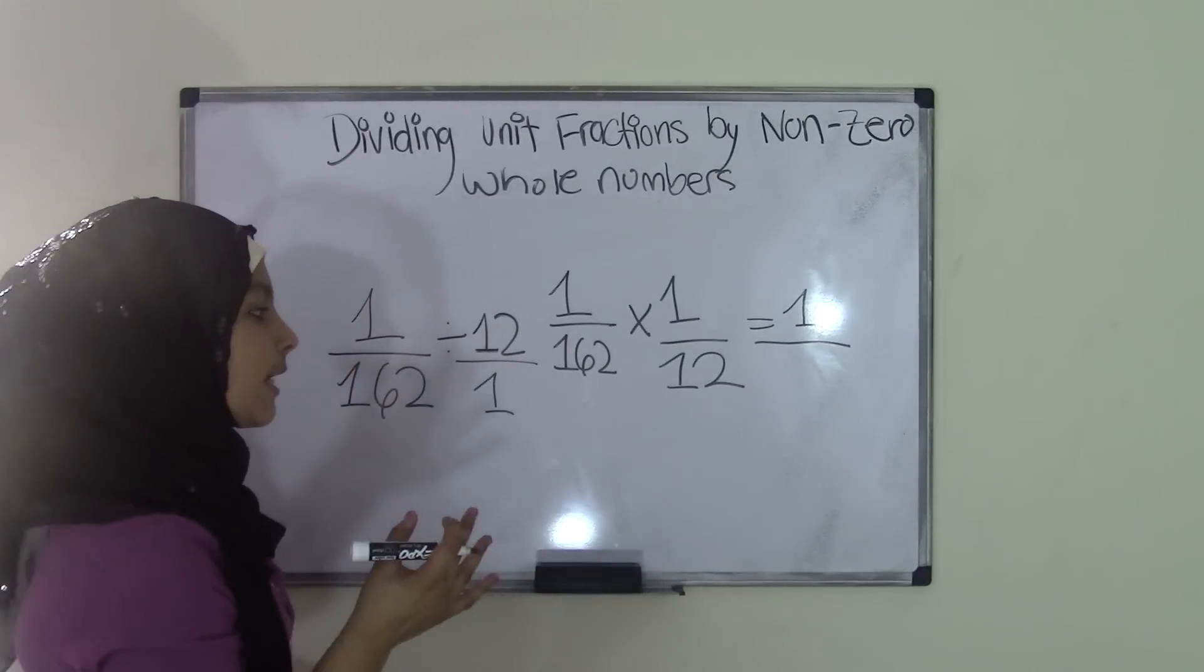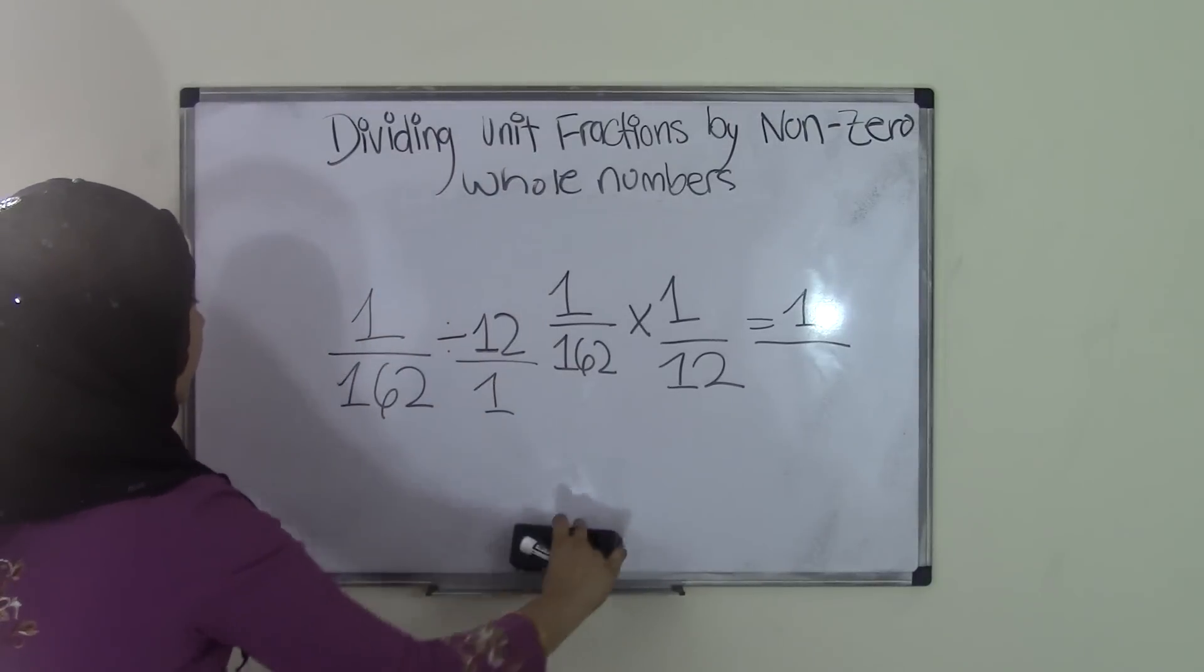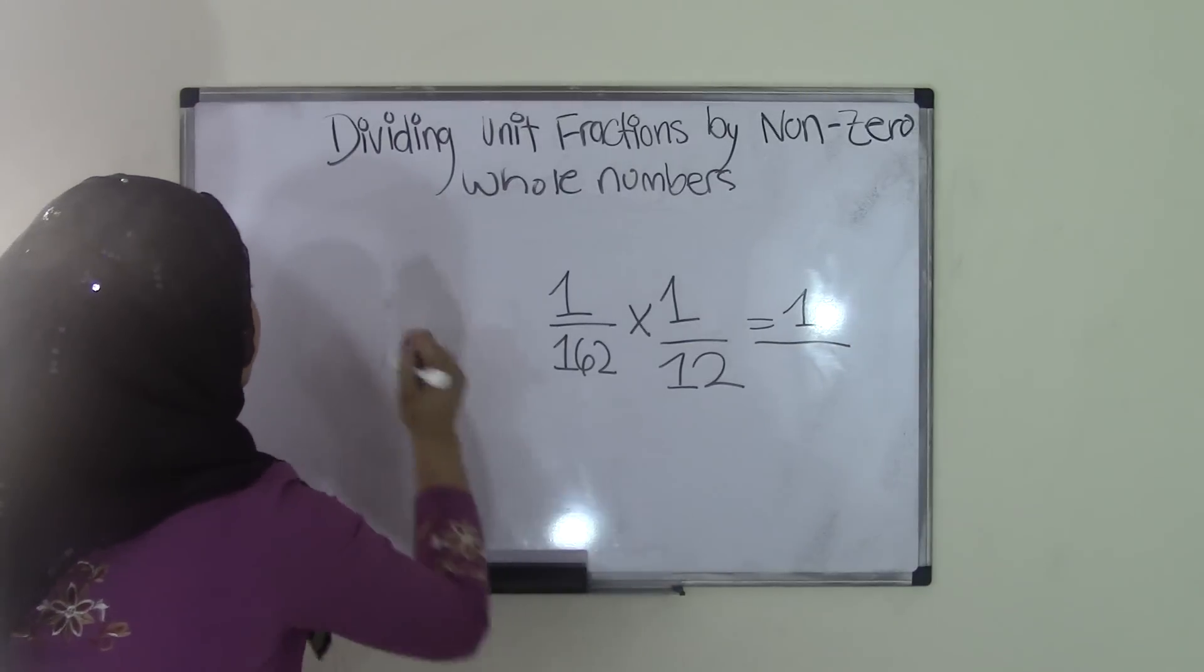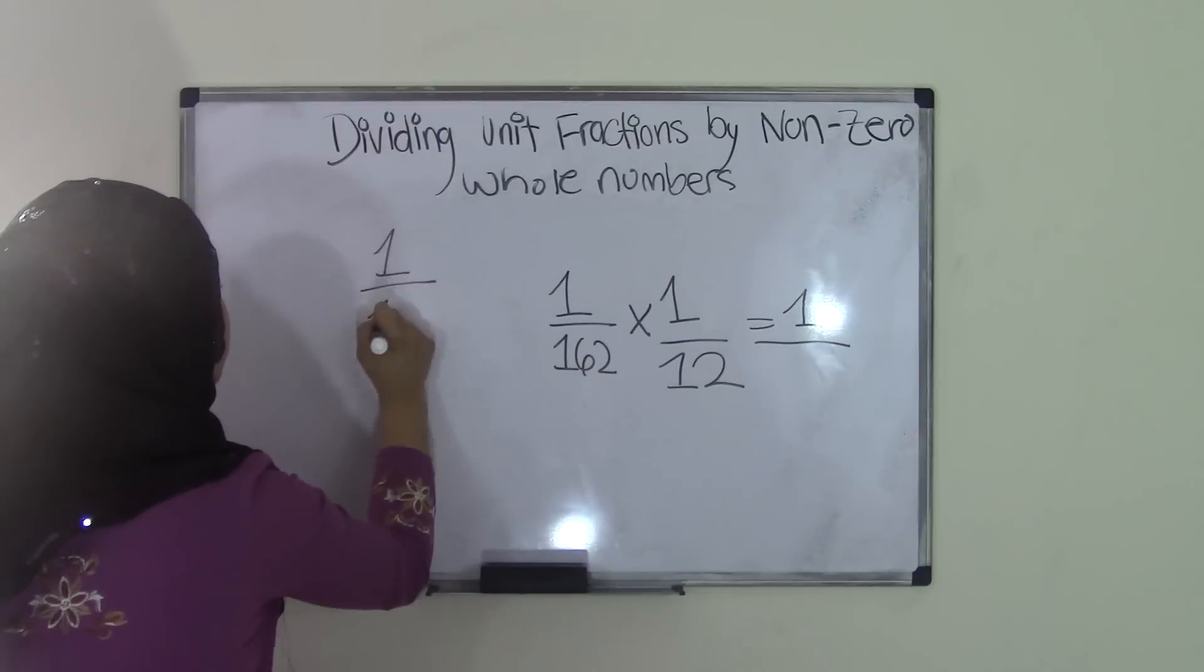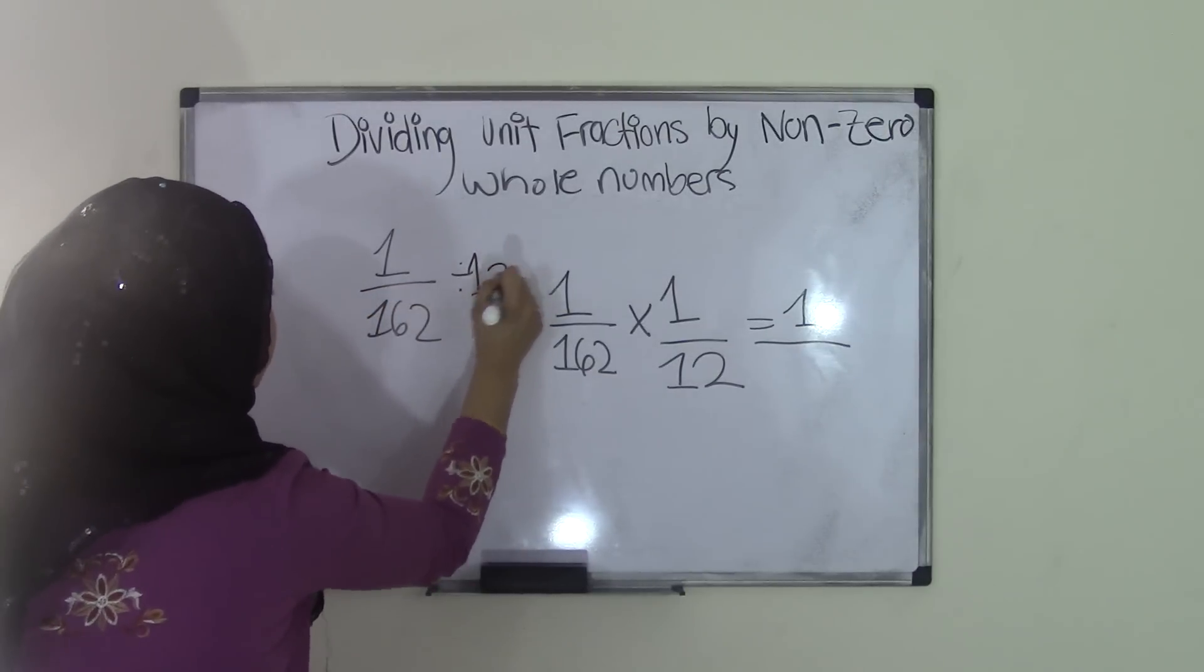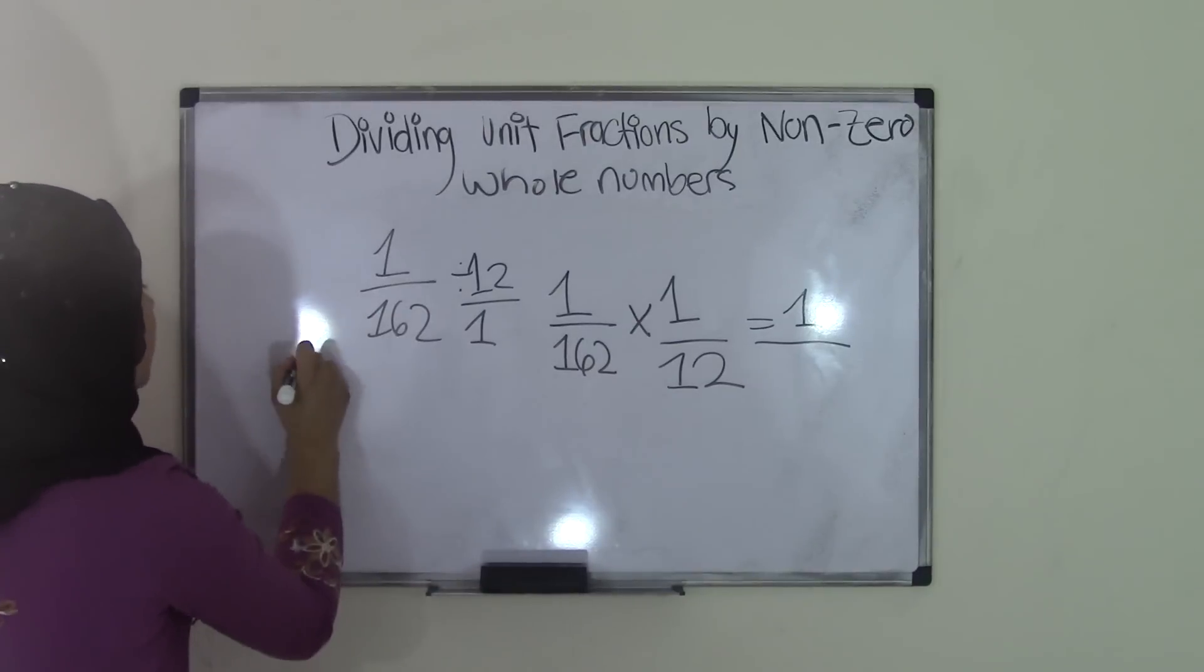And now we have to find our denominator by multiplying 162 by 12. Now these are big numbers, yes, but this will really improve our multiplication skills, right? So if we come over here, and if I were to scoot this over here, so we're 1 over 162 divided by 12 over 1, right, as our original problem. So now it gives us more space to do our multiplication. So 162 times 12.